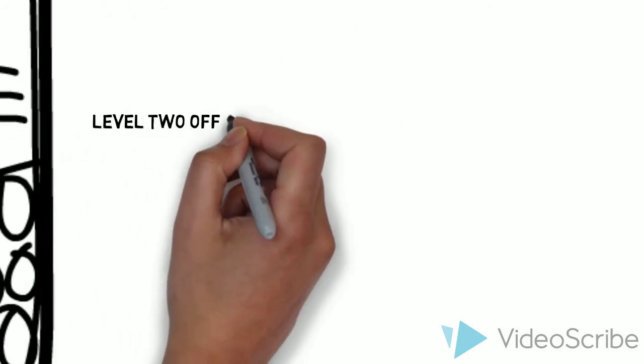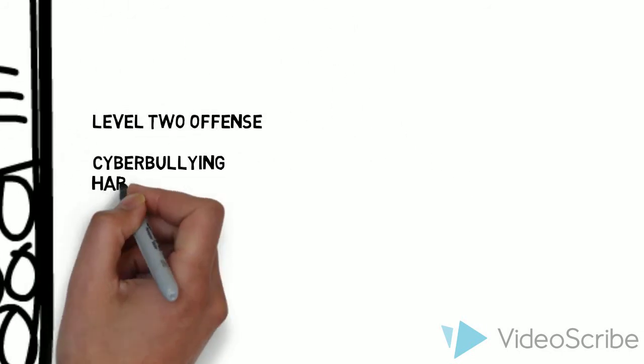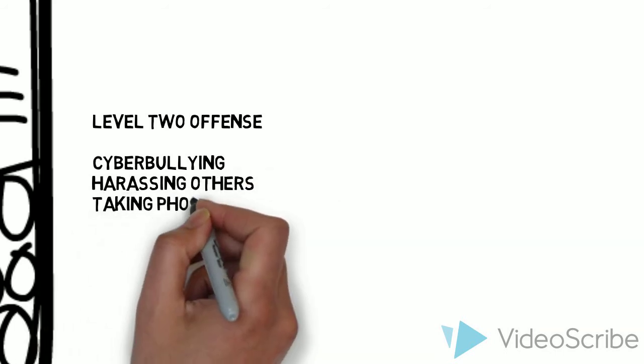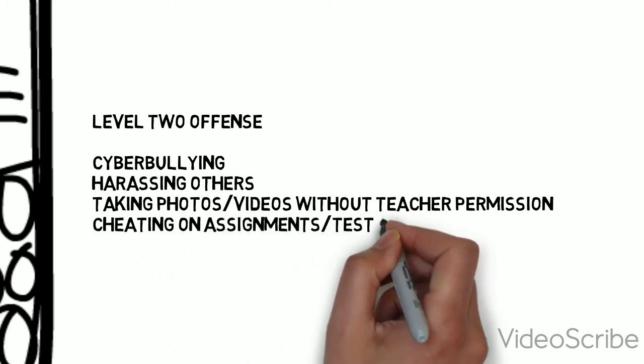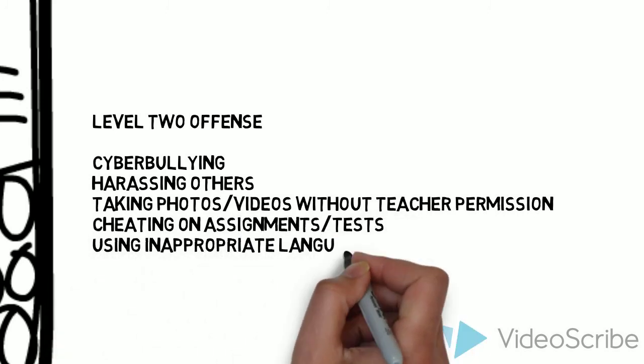The second level offense includes cyber bullying, harassing others, taking photos or videos without teacher permission, cheating on an assignment or a test, or using inappropriate language.